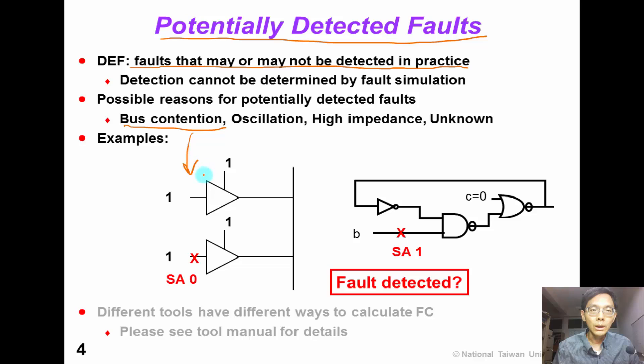Such as this example: Suppose we have a stuck-at-0 fault and two bus drivers are driving this bus at the same time. We don't know the exact value on the bus, so this is a potentially detected fault.